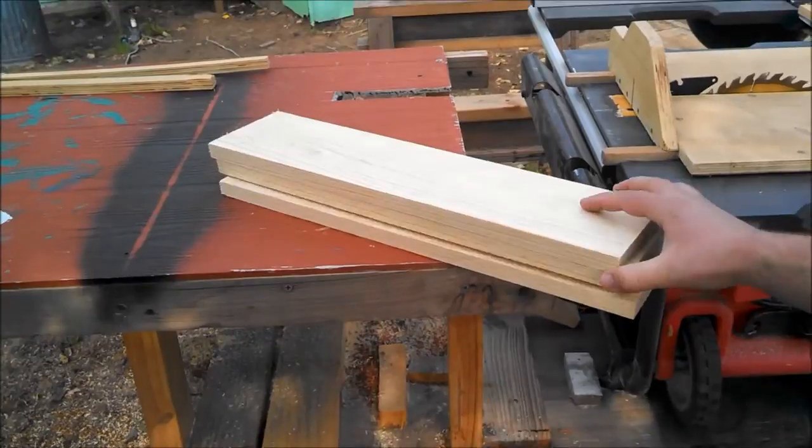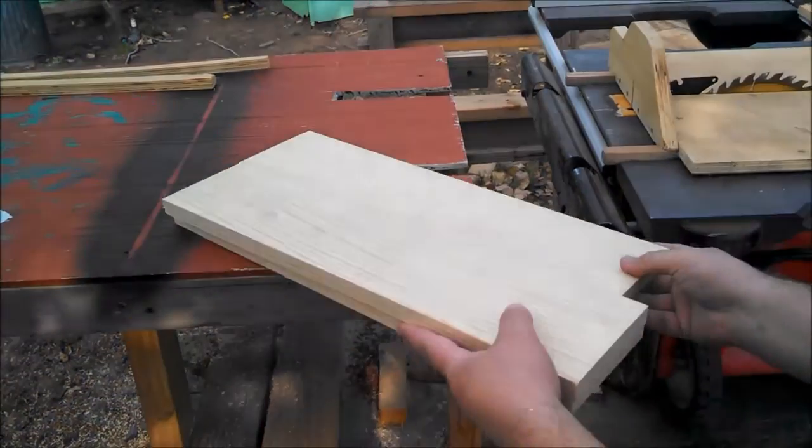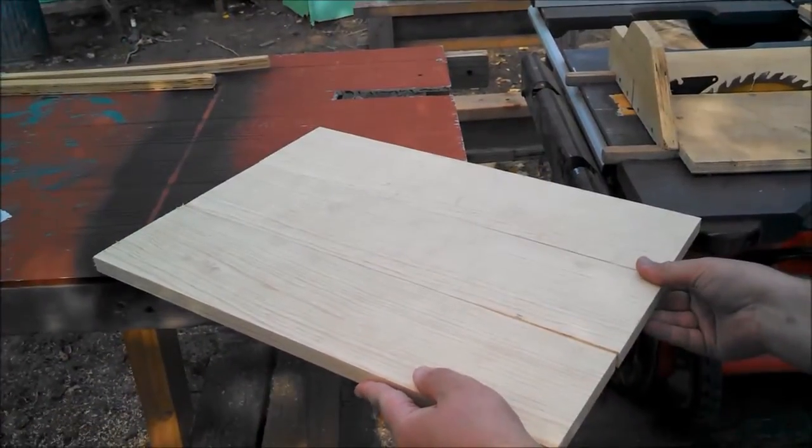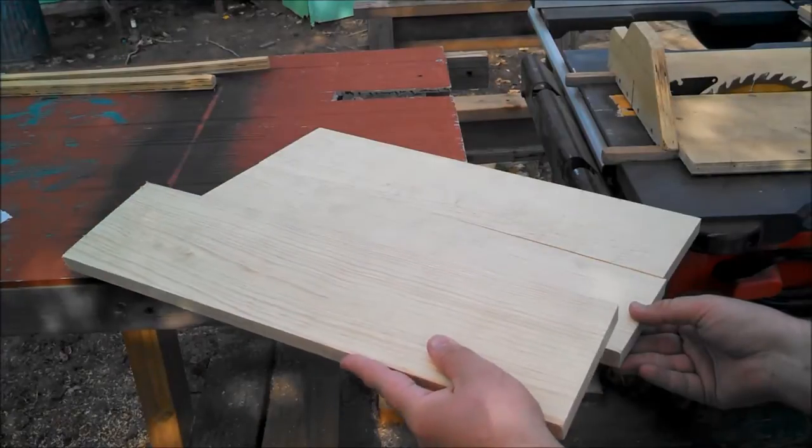Now these three boards we just ripped, or this one board we ripped into three pieces, is going to make up the lid. I'm going to use a biscuit joiner and clamps to join them together. And then once that's dry and I have the box built, I'll rip this to size.